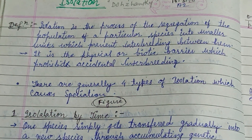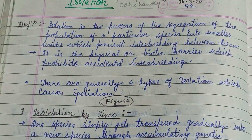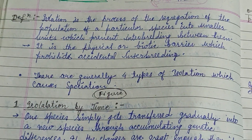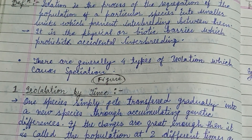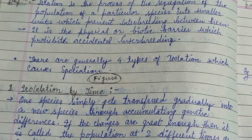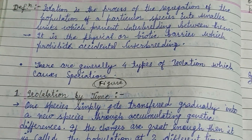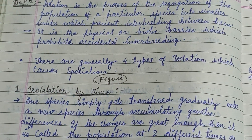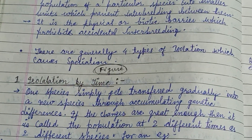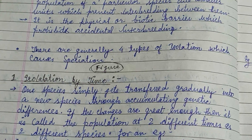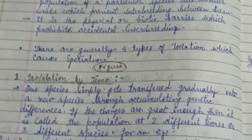Isolation is a process by which the segregation of the population of a particular species into a smaller unit, which prevents interbreeding between them. So it is a physical or biotic barrier which prohibits accidental interbreeding.